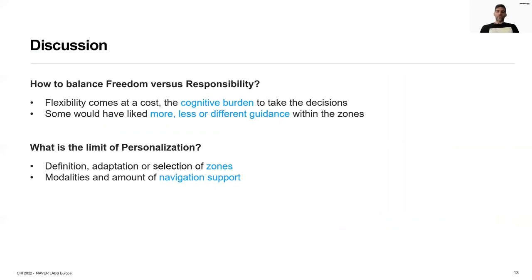Some interesting questions arise from our findings. We understood that it is important to find the right balance between freedom and responsibility. Indeed, flexibility comes at a cost, which is the cognitive burden necessary to take direct decisions, and some would have liked more, less, or even different guidance within the zones. These differences and personal preferences could be addressed by letting users define, adapt, or select the zones as well as the modalities and amount of navigation support. Leveraging personalization is then an interesting aspect to be explored for our system in the future.